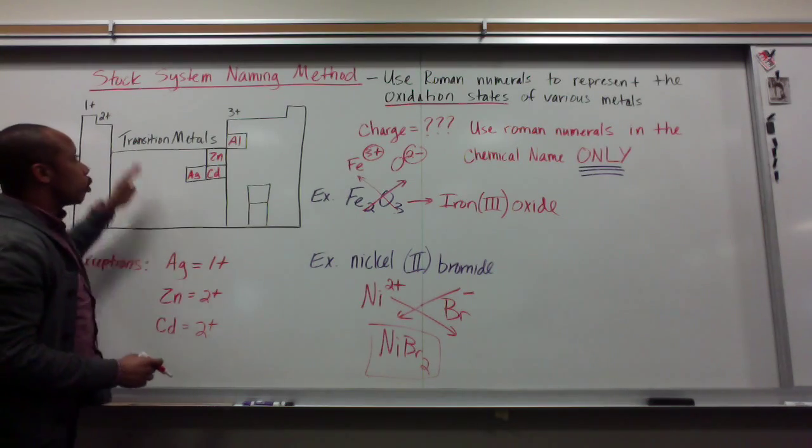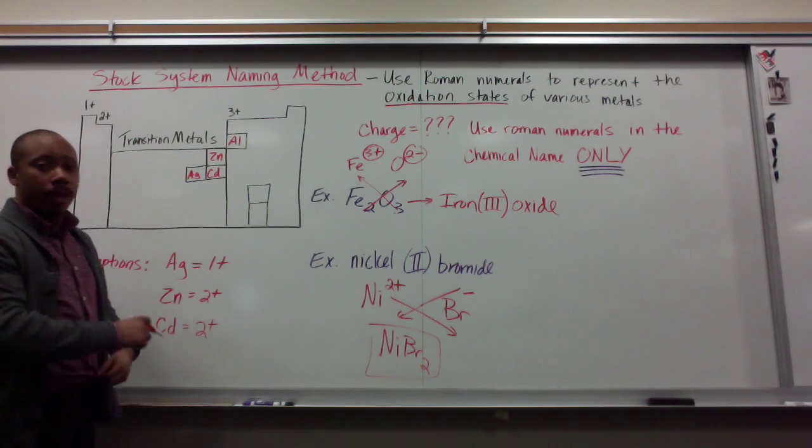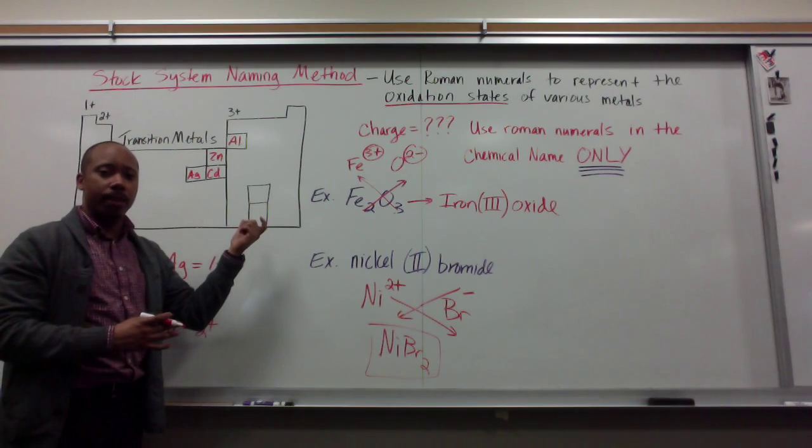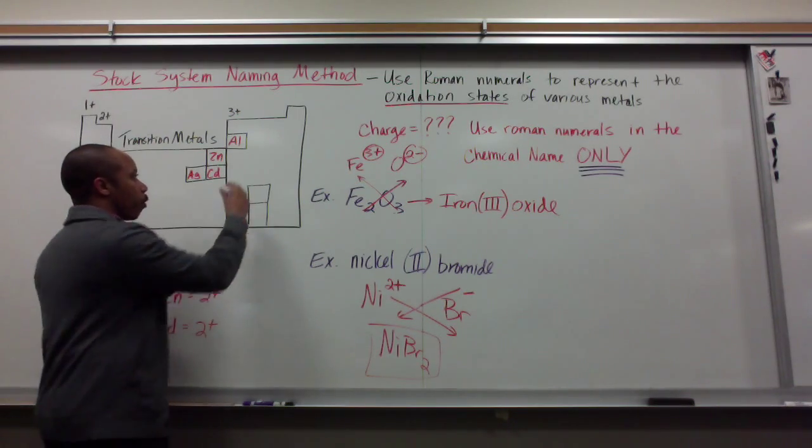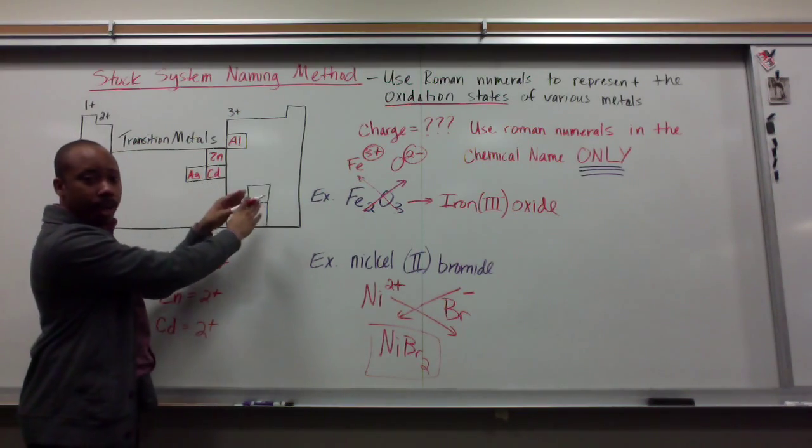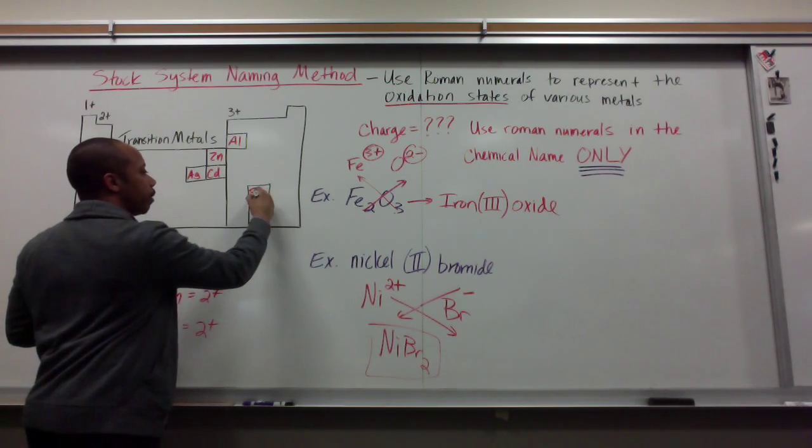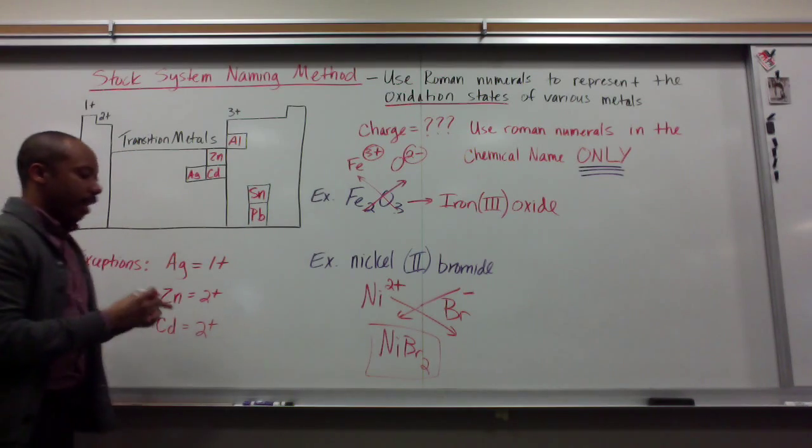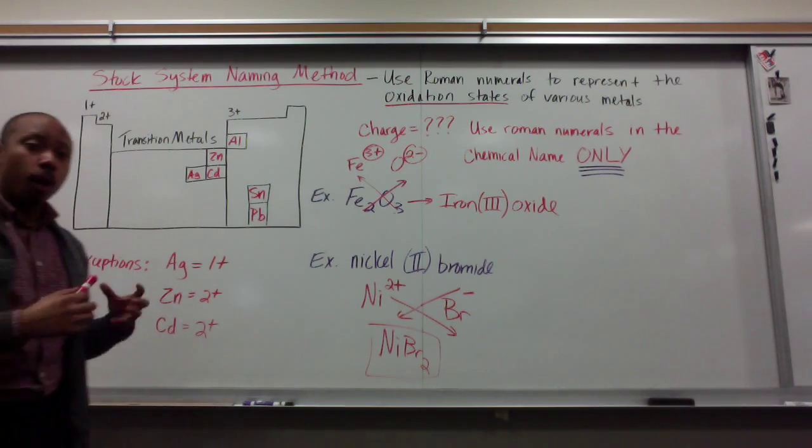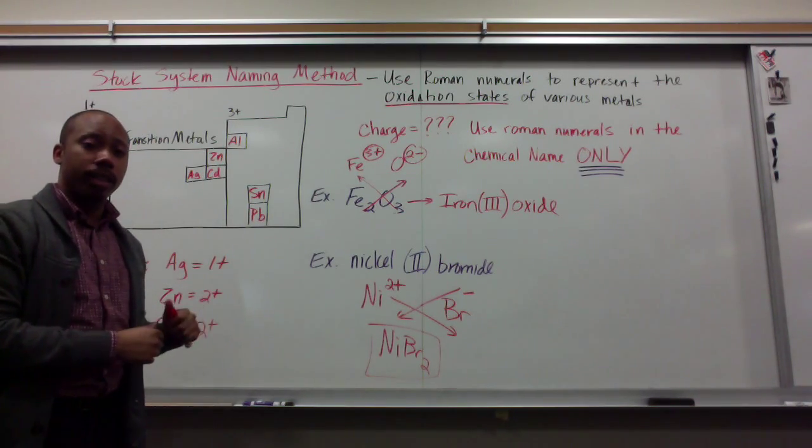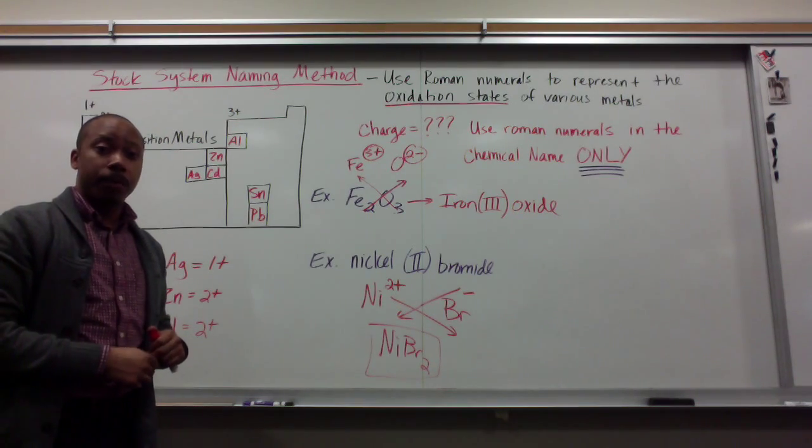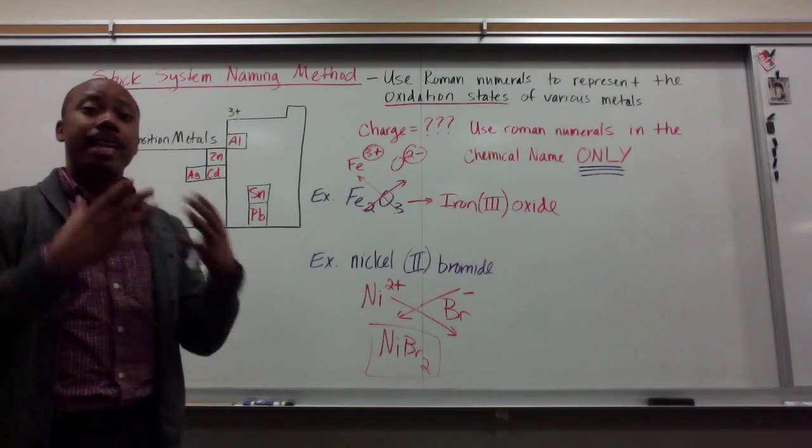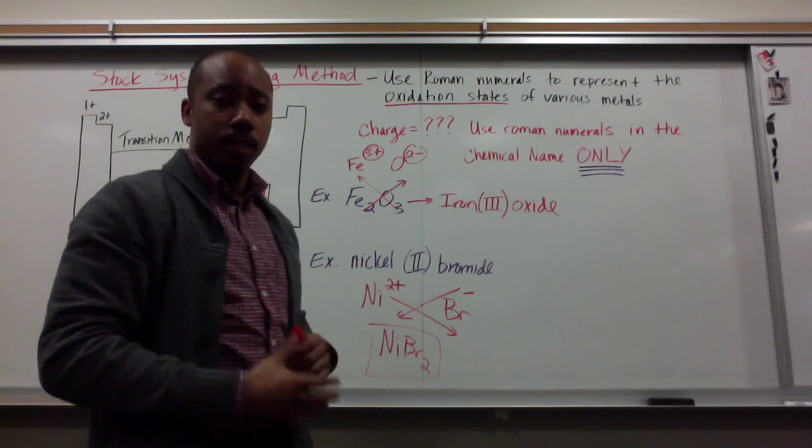We also use the stock system naming method with elements in group 4A at the bottom. Metals here in group 4A, they're in my other metals category. Namely, Sn, which is tin, and Pb, which is lead. So, gentlemen, hopefully this helps. We're going to be doing some practice with this shortly, and this is going to help you set your game up when naming different compounds in chemistry. Take good notes, gents.